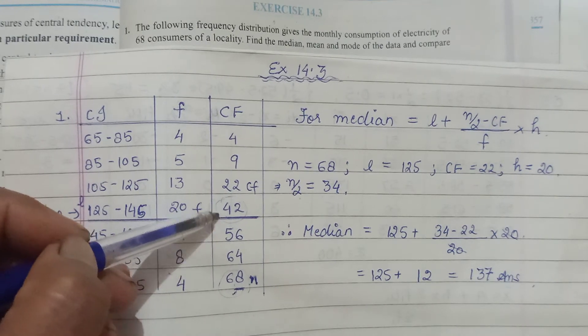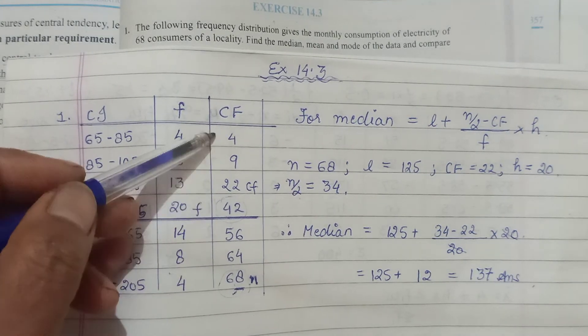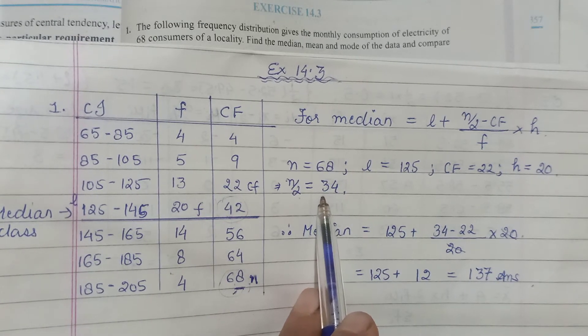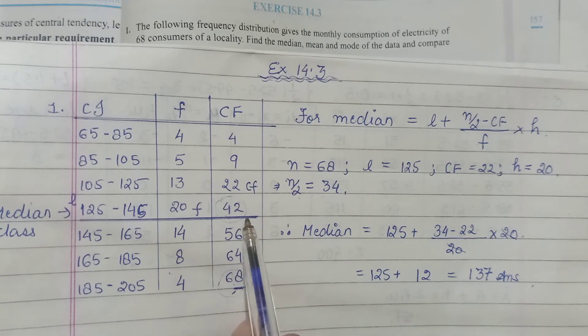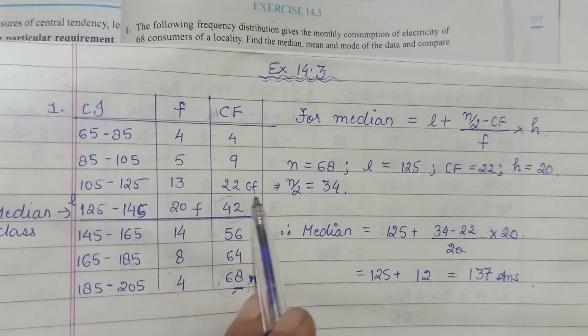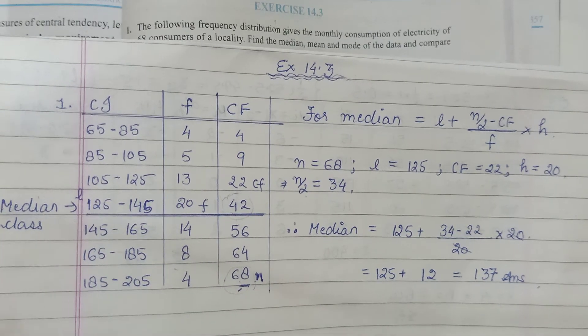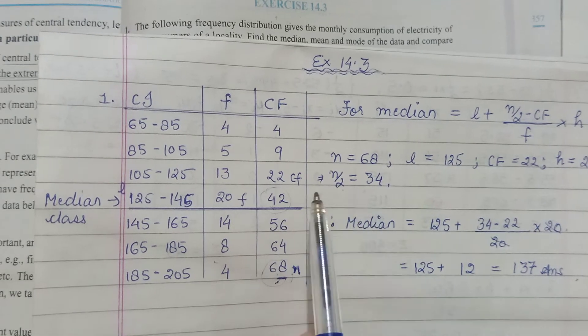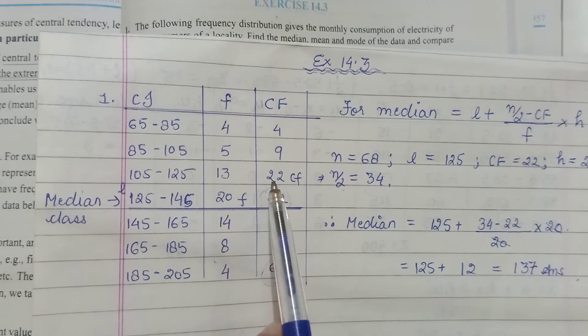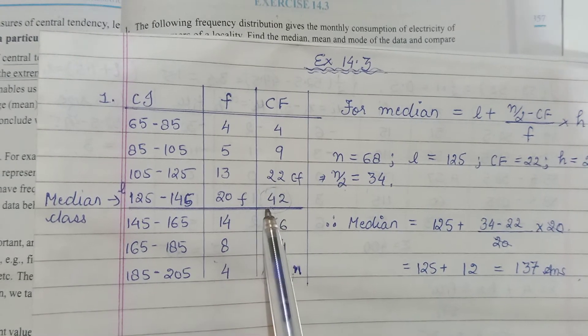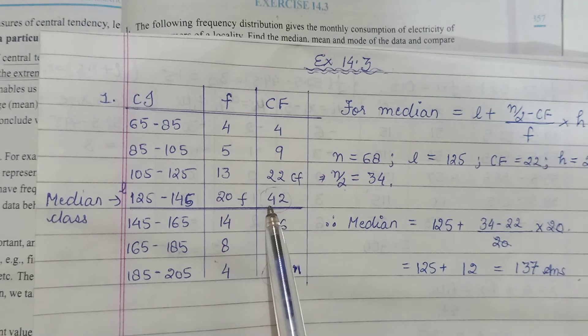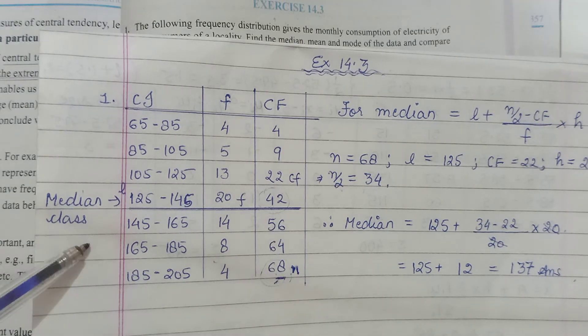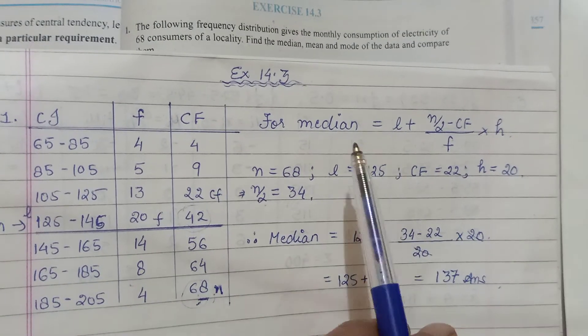Jab mein 42 bol rahi hoon toh 42 ke andar kahe 34 aa gaya hoga. So yaha tak 42 entries aa gaya hai toh 34 comes somewhere below this. So jo bhi entry hogi CF ki more than n by 2, that particular one is mentioned as your median class. 42 tha, n by 2 humara 34 hai, so we would say 34 is likely to come between this, after 22 and before 42. So this one becomes your median class. And why do we need to trace a median class? Because as our formula was here...